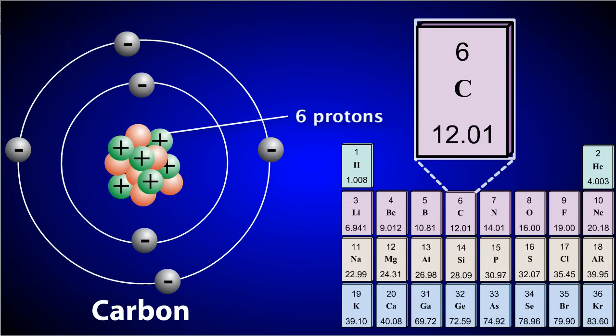In an atom of carbon that is neutral, there must also be six electrons. This is because the positive charge of carbon's protons must be balanced by the negative charge of carbon's electrons. Because electrons and protons have an equal and opposite charge, there must be an equal number of both protons and electrons in a neutral atom of an element.